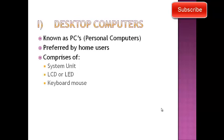Agar ek desktop computer ki specifications discuss ki jayein to normally ek home user prefer karta hai: 160GB se 500GB tak hard drive, RAMs 2GB se 4GB to 8GB normal routine mein required hoti hain, aur processor mein Core i3, Core i5, Core i7, Core i9 — different generations ke processors — aajkal use ho rahe hain.